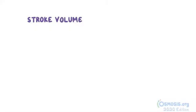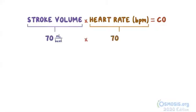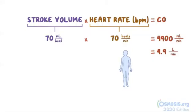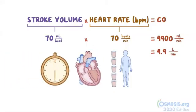Every minute our heart beats about 70 times on average. If we multiply the stroke volume times the heart rate — or beats per minute — we get the cardiac output, which is the total volume of blood that the left ventricle ejects in one minute. Using the stroke volume of 70 milliliters per beat and a resting heart rate of 70 beats per minute, cardiac output is 4,900 milliliters per minute, or 4.9 liters per minute. Remember that a normal adult body contains approximately 5 liters of blood, so every last drop of blood travels through the left ventricle at least once every minute.